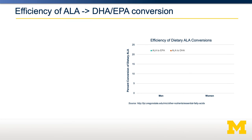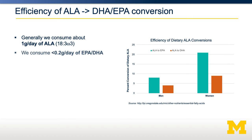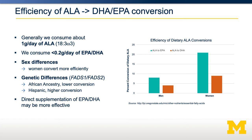Unfortunately, the rate of conversion is quite inefficient in most people. The efficiency of conversion of dietary ALA (omega-3 fatty acid) into either DHA or EPA varies both by sex and by the end product. We generally consume about one gram per day of alpha-linolenic acid as a population — this is less than the adequate intake — and we consume even less EPA and DHA. There are important sex and genetic differences that explain differences in individuals' rate of conversion of ALA into EPA and DHA, and also linoleic acid into arachidonic acid. Therefore, it's been suggested that direct supplementation of EPA and DHA may be more beneficial, because it doesn't rely on this inefficient conversion.